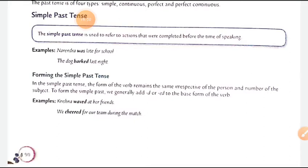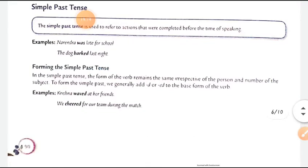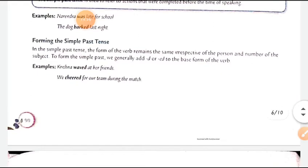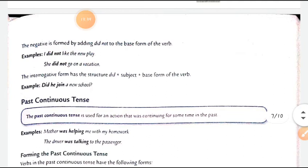Forming the simple past tense: we generally add 'd' or 'ed' to the base form of the verb. In the past tense, we use the second form of the verb. For example: 'Krishna waved at her friends' — 'wave' mein already 'e' hai, isliye sirf 'd' laga. 'We cheered for our team during the match' — 'cheer' mein 'ed' lagaya. That was the simple past tense.